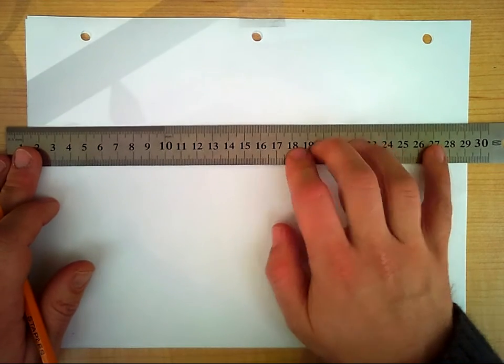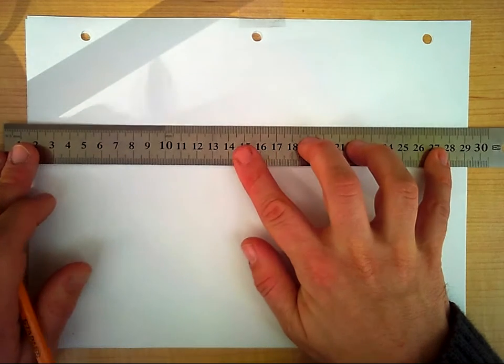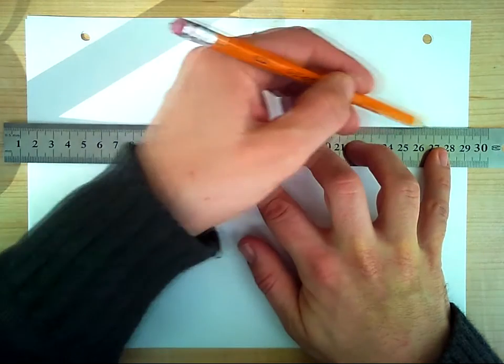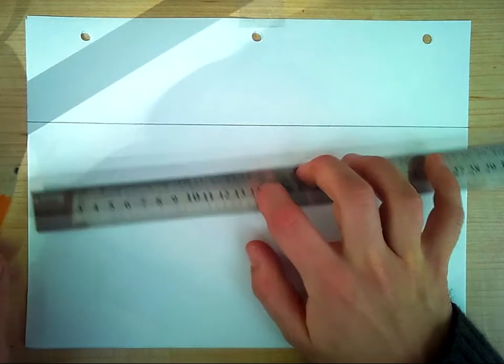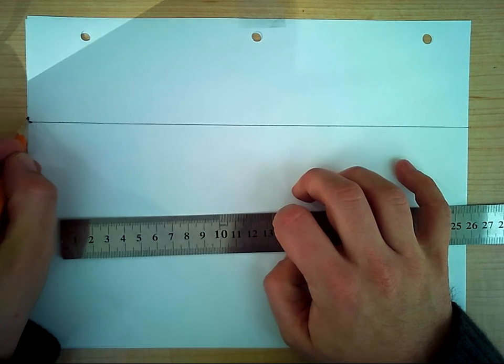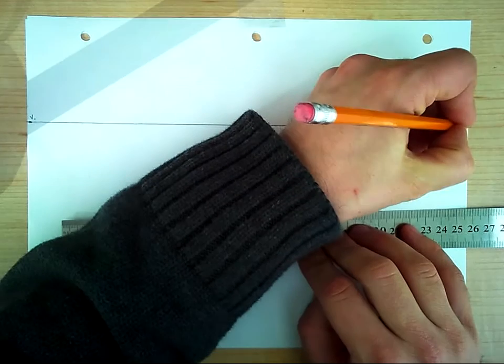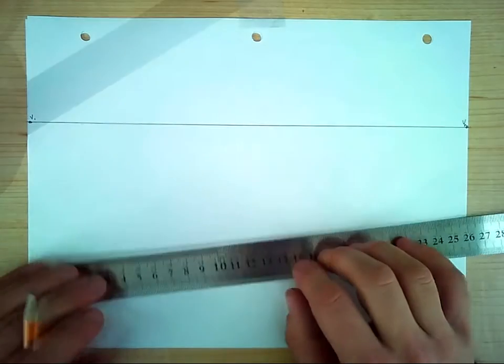I'm going to start with a horizon line that is a little higher up on the picture plane. Add vanishing point number one and vanishing point number two.